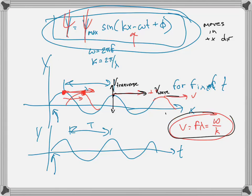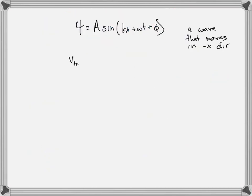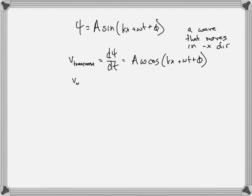The transverse velocity and the wave velocity are very different things. The wave velocity is f·λ or ω/k. The transverse velocity, v_transverse, is just ∂ψ/∂t — the velocity moving up and down in the y direction. The transverse velocity is therefore A·ω·cosine(kx plus ωt plus φ).